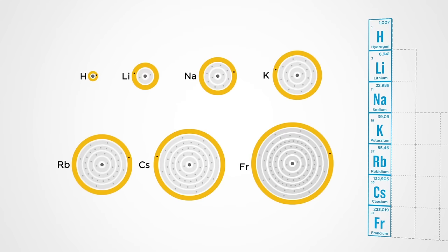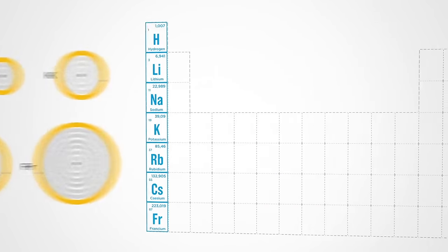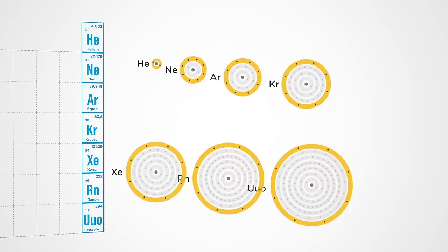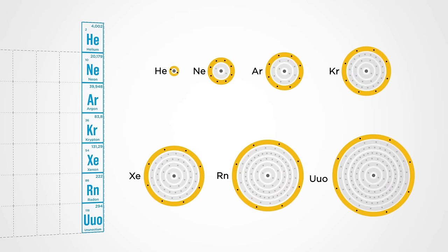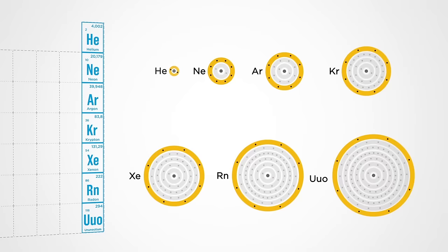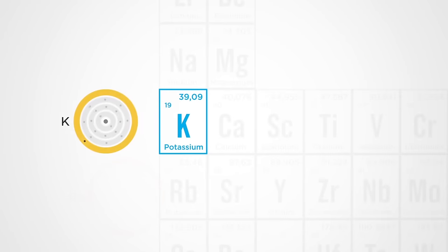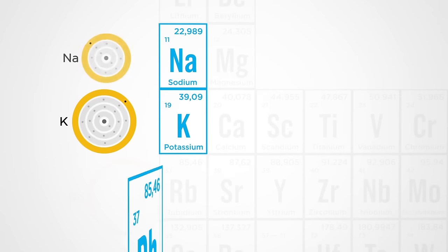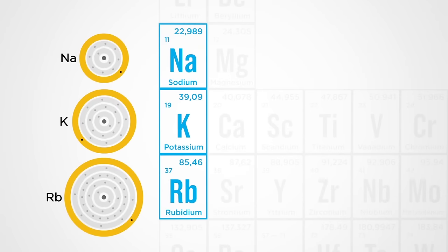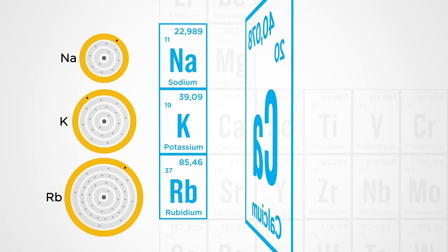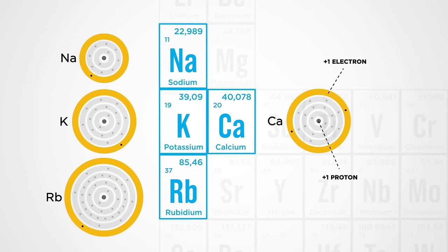In the first column of the table, we have the elements that have a single electron in the outer layer, and in the last column we have those who have filled this layer. That's why each chemical element in the periodic table has a very well-defined neighborhood. Above and below it are elements with the same distribution of electrons and very similar properties, and on its right it has an element that has an electron and one proton more and therefore has different properties.